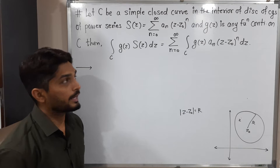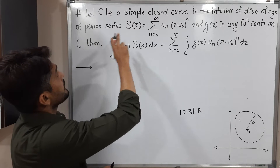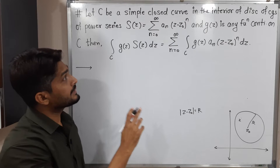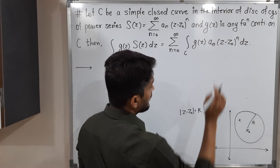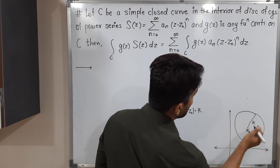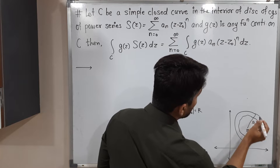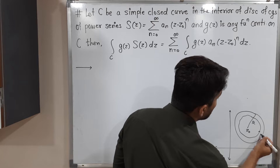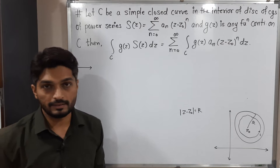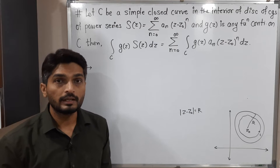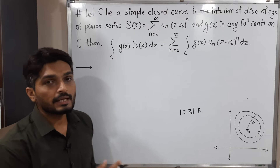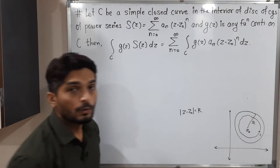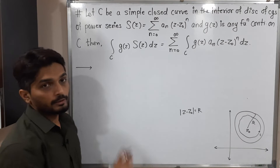C is a simple closed curve inside the disk of convergence — meaning it starts and ends at the same point and does not intersect itself. g is any continuous function defined on C. We have to prove a certain equality.